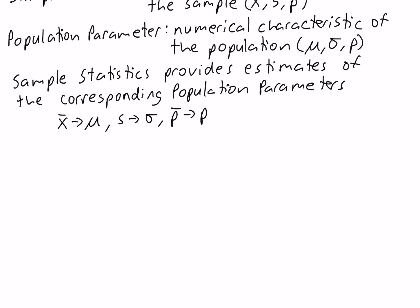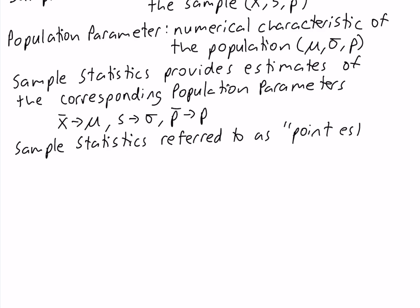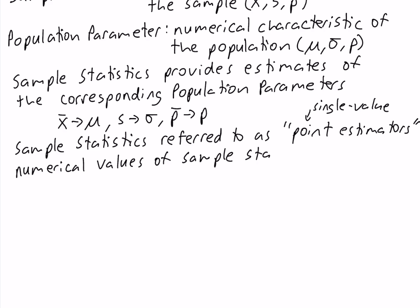We refer to the sample statistics as point estimators. We use the term 'point' because they provide single value estimates of the corresponding population parameters. The numerical values of the sample statistics are referred to as point estimates.